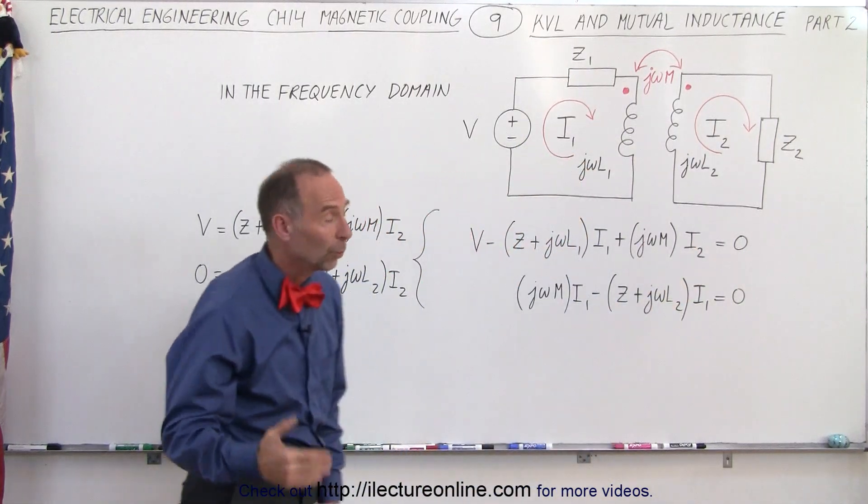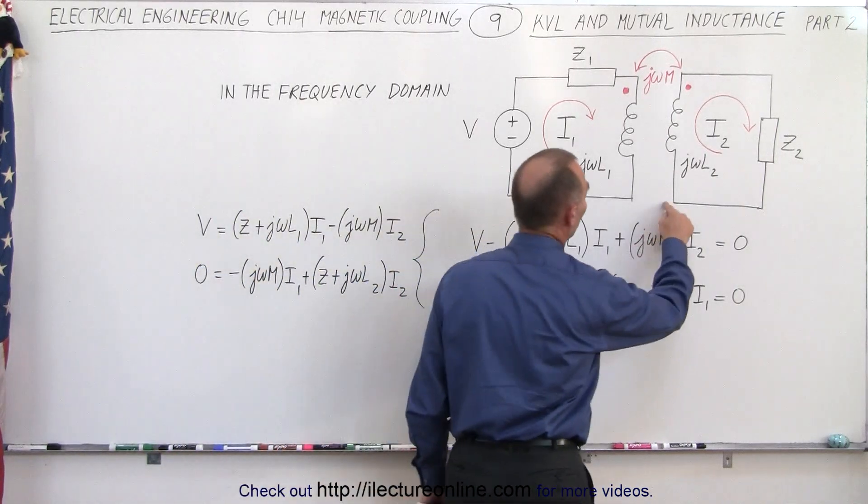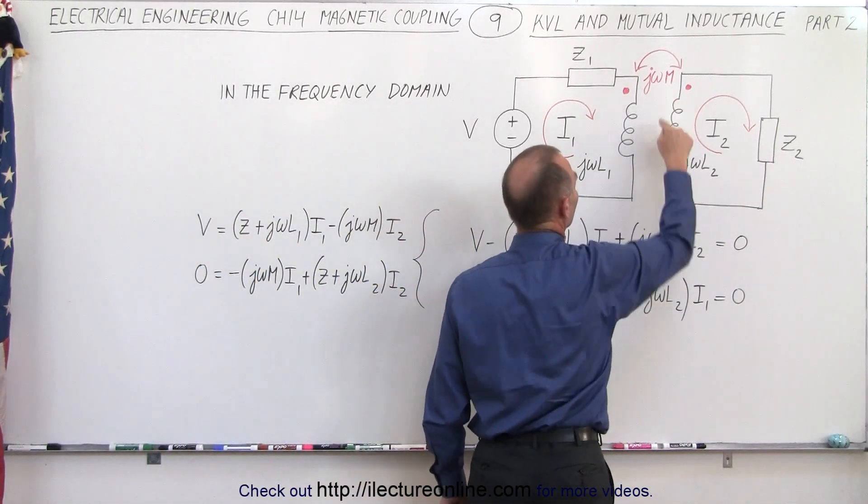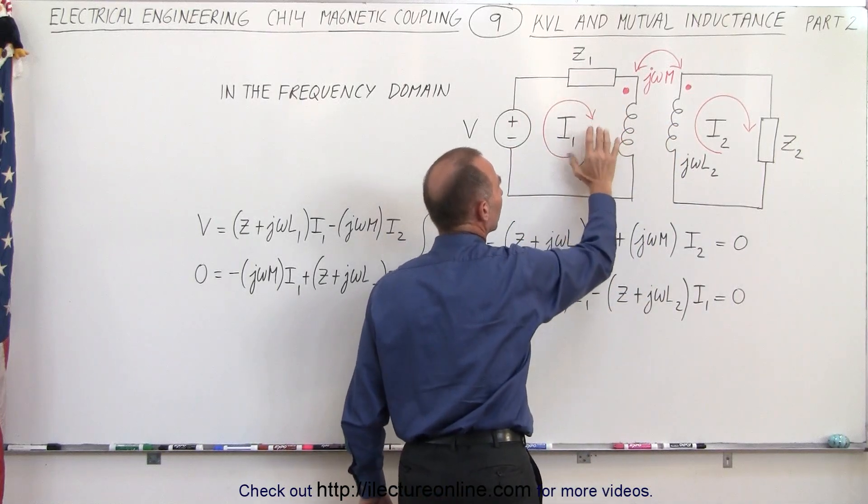Of course, when we add up all the voltages, it is equal to zero. We can do the same thing in the second circuit. Notice that we start at this corner. First, we go across the inductor here, but we're going to only consider the mutual inductance.